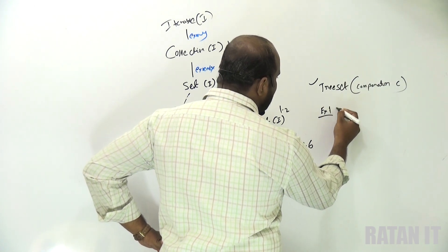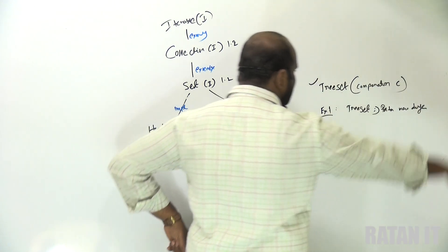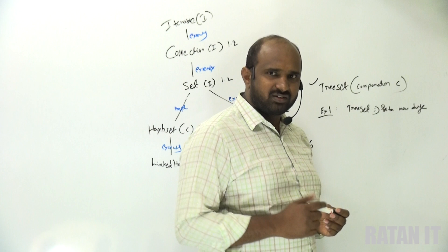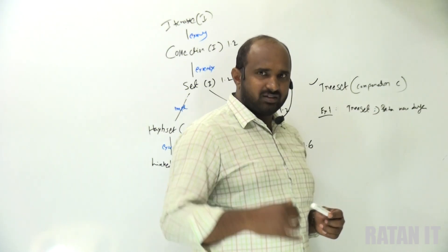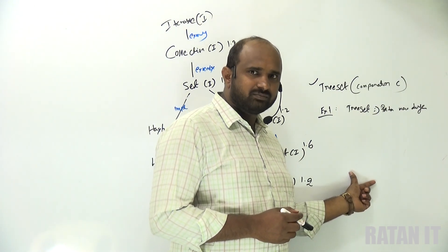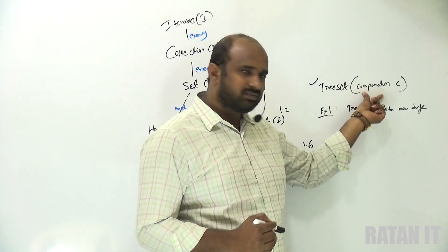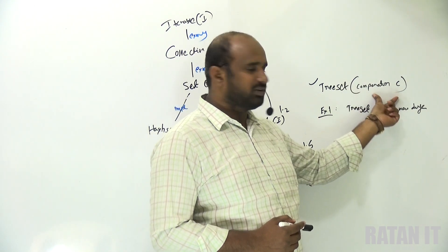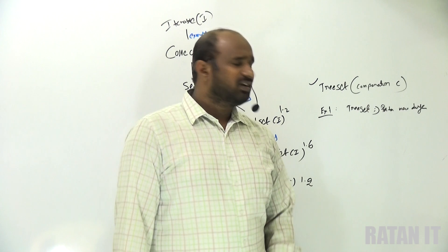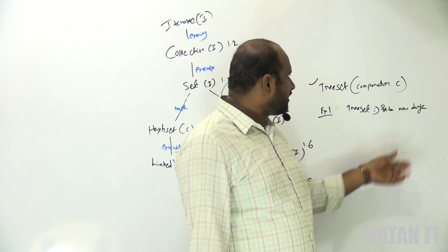In example one, I will add some string data to the TreeSet — ratan, anu, durga. By default, TreeSet stores data in ascending order. But I don't want ascending order; I want descending order. If you want descending order — that is your own custom requirement — then take your own comparator. That comparator does the descending order operation, and you pass that comparator object to the TreeSet constructor. Without a comparator object, data is printed in ascending order by default.